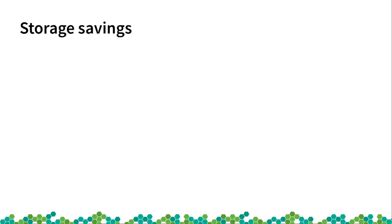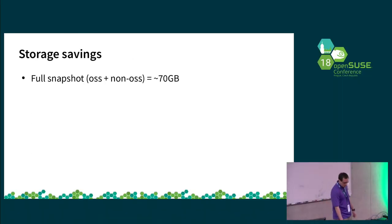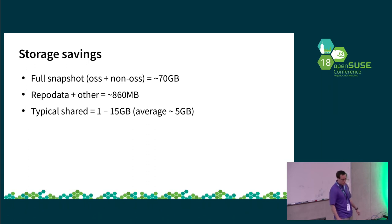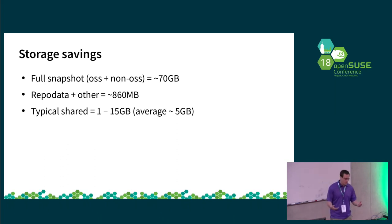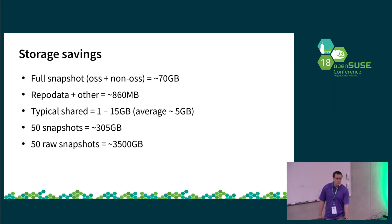To analyze that further: a full snapshot of the OSS and non-OSS repositories is roughly 70 gigs. The repo data directory and other files is around 860 megabytes. The typical shared usage between snapshots — which gives a rough idea of how much churn there actually is in Tumbleweed — is anywhere from 1 to 15 gigs, with the average being right around 5 gigabytes. So 50 snapshots ends up using around 305 gigs, whereas the raw would have been three and a half terabytes — we're using roughly 9% of the size.